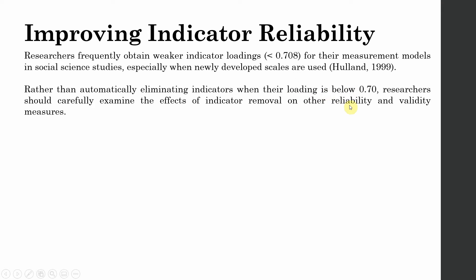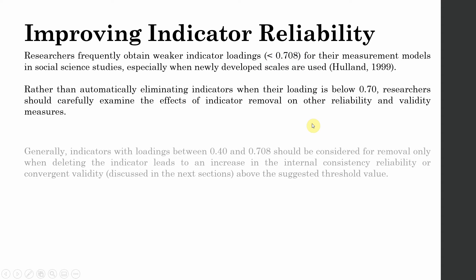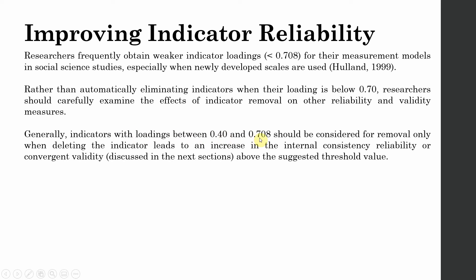You assess whether removal will significantly improve the reliability and validity. If your reliability and validity is already above the required limit, you do not need to delete an indicator because its loading was less than 0.708. Generally, indicators with loadings between 0.40 and 0.708 should be considered for removal only when deleting the indicator leads to an increase in internal consistency reliability or convergent validity above the threshold value. You only remove it if it significantly improves your reliability and validity above the threshold value.